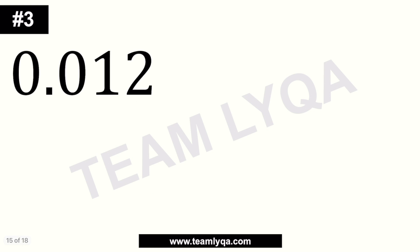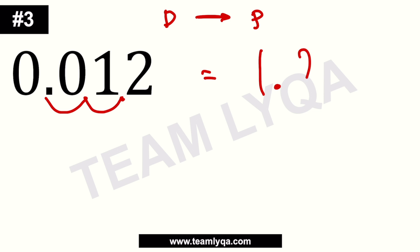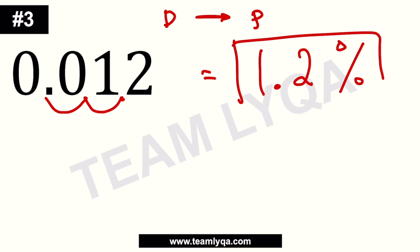What about 0.012? In this case, you have a decimal and you're making it a percentage. So the movement is to the right: 1, 2. Now you have 1.2, and then you add the percent symbol. That's your answer: 1.2 percent.